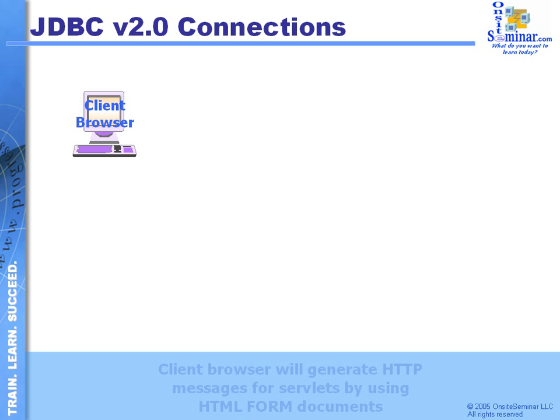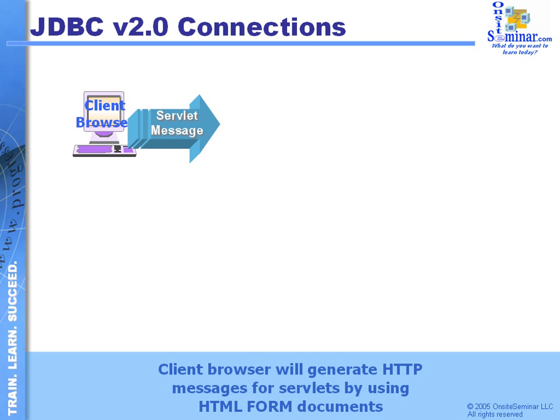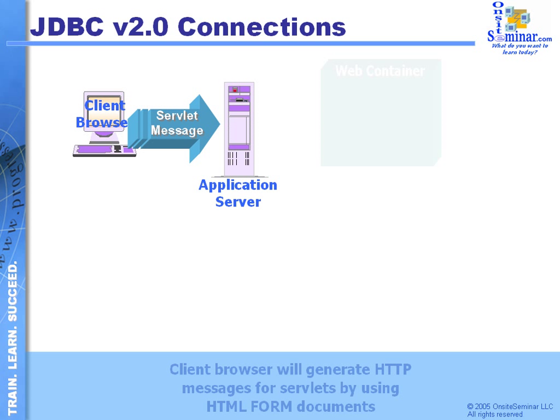We've talked about how connection pools are managed in JDBC version 1. Now we want to talk about how it's going to be performed with JDBC version 2. The client browser is going to be generating different servlet messages, and those messages are going to be routed to an application server, where servlets are going to retrieve those particular messages.